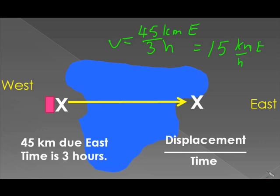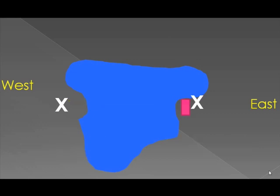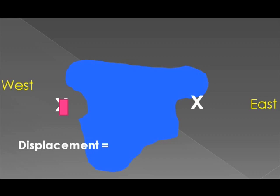Now, let's suppose I do the return trip home and go all the way back. That means my displacement — where I started and where I ended up — is zero. And that means my velocity, displacement over time, is also zero.